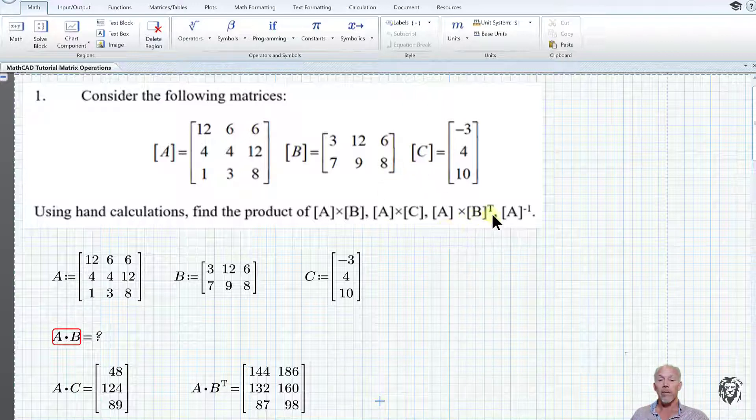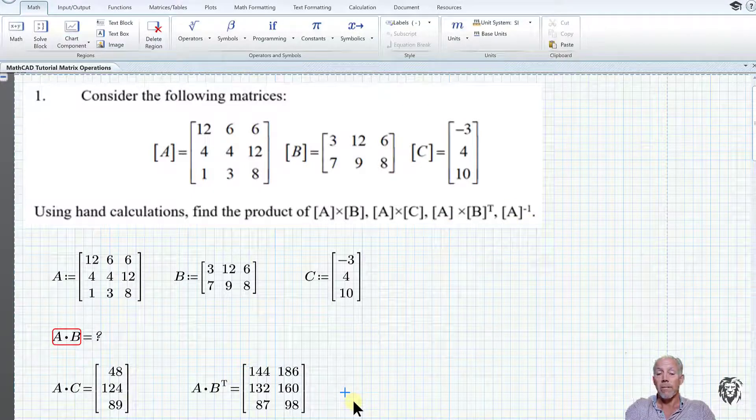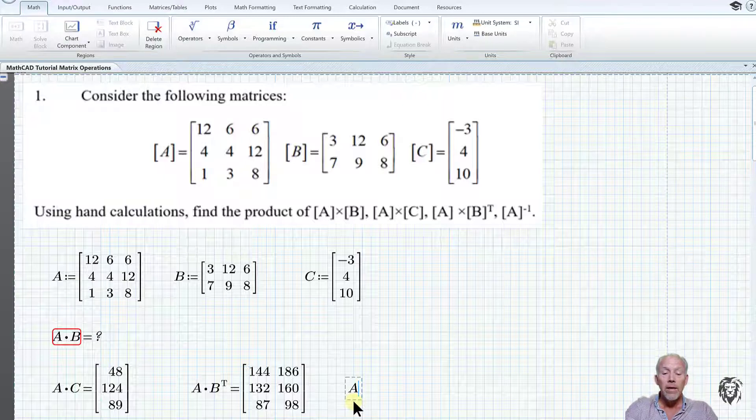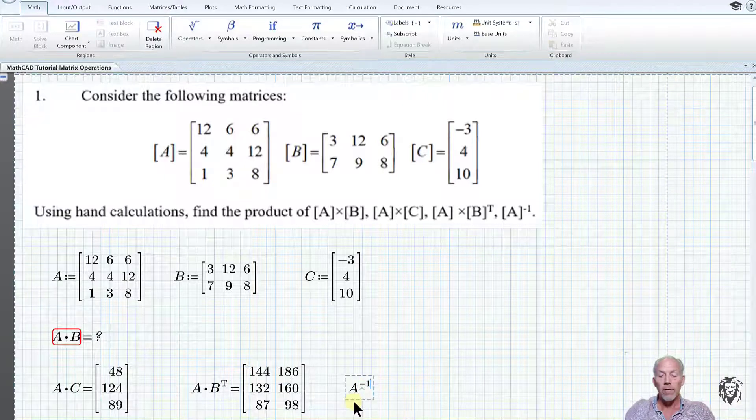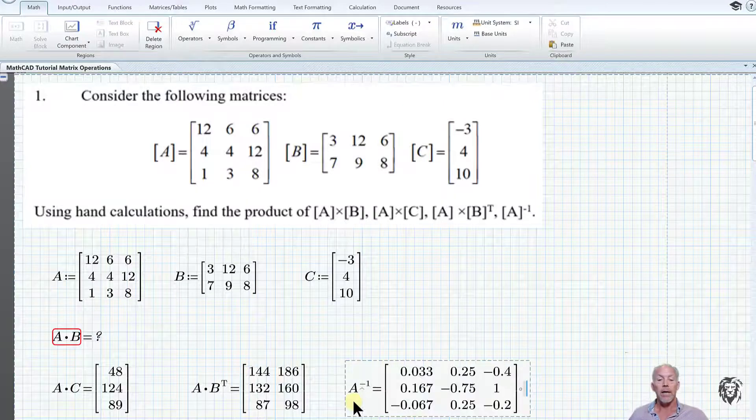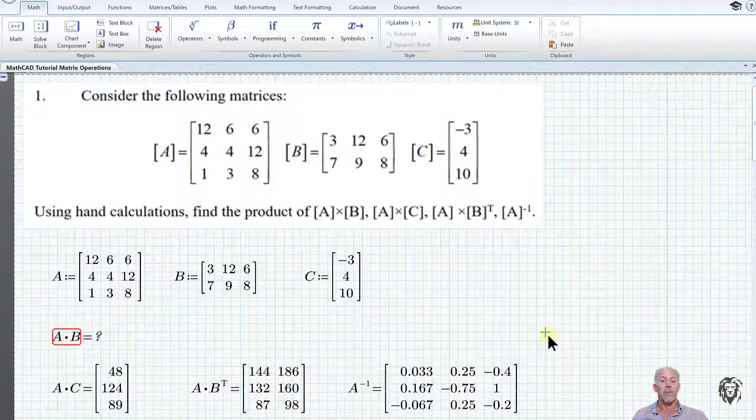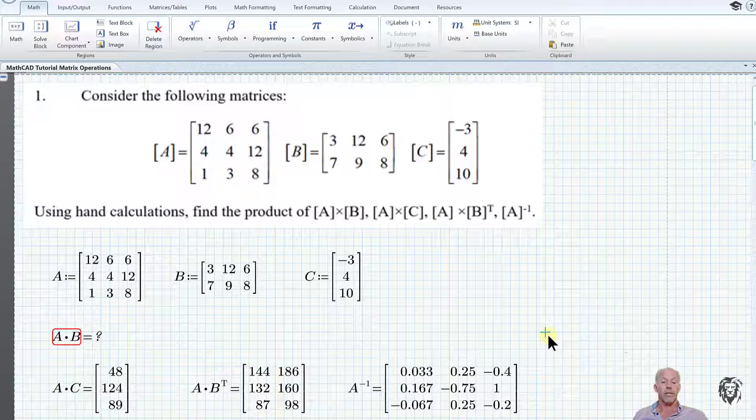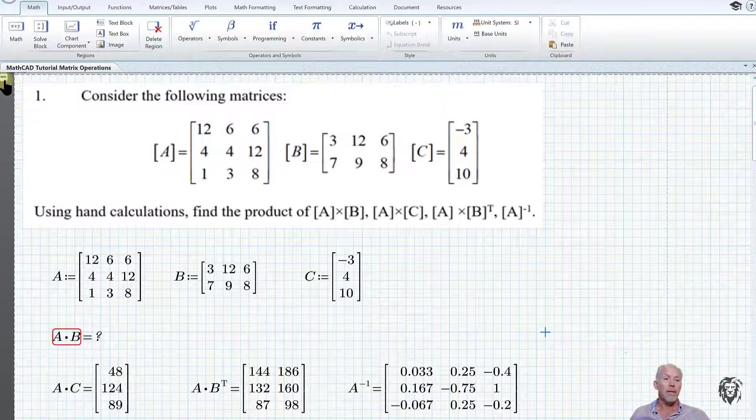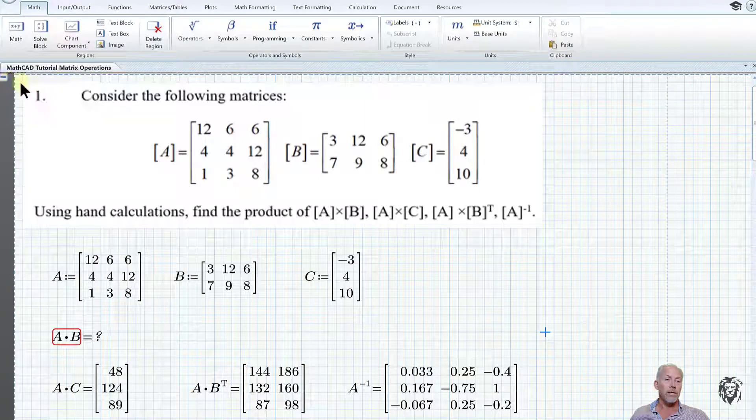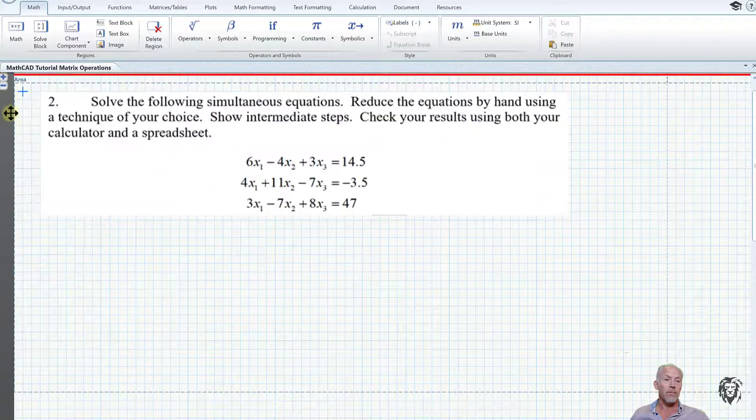The final one on this set was to do A inverse. So A raised to the power of negative one, hit the equal sign, and we get A inverse. There's all your basic matrix operations in MathCAD, straightforward, simple, said and done.